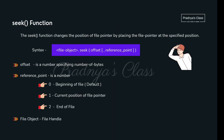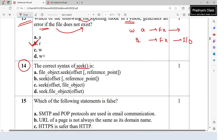The seek function is used along with a file object and has two parameters. The first is 'offset' — a number specifying the number of bytes. The second parameter, 'reference point', is optional and indicates the position in the file. The correct option is A.